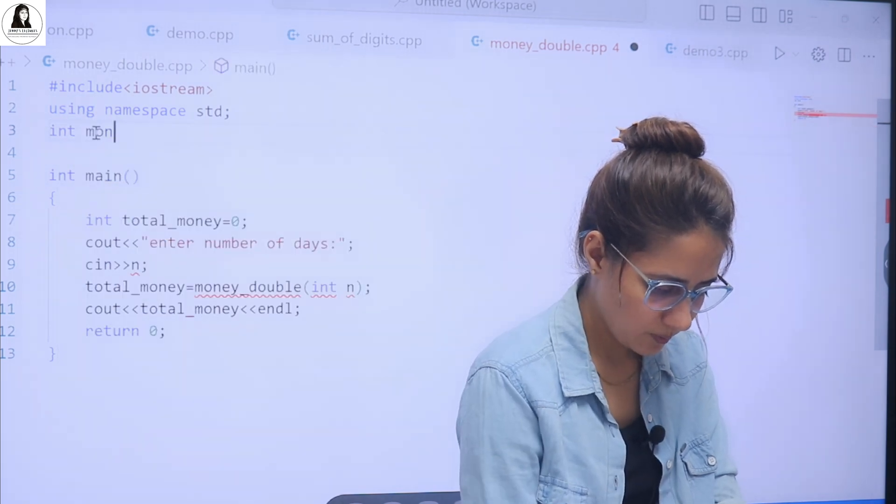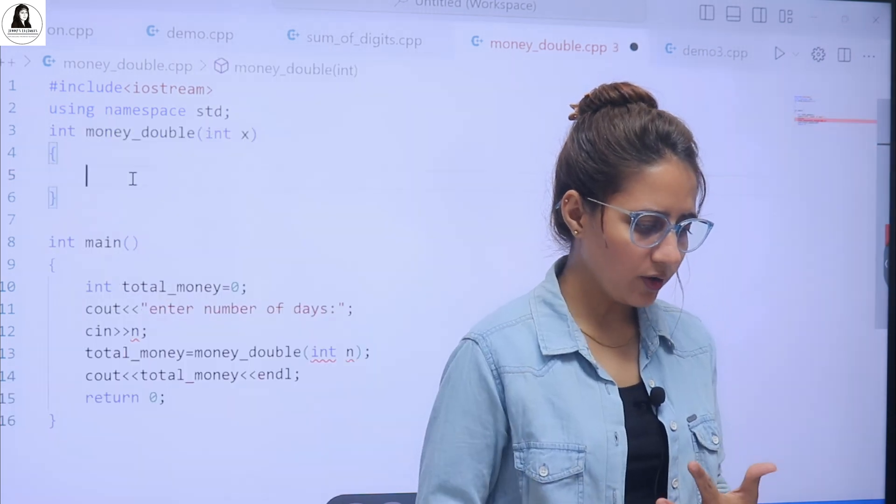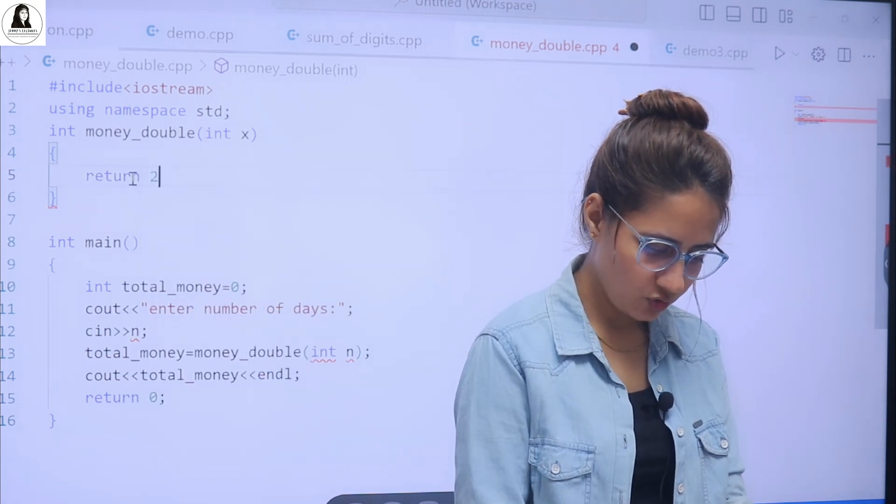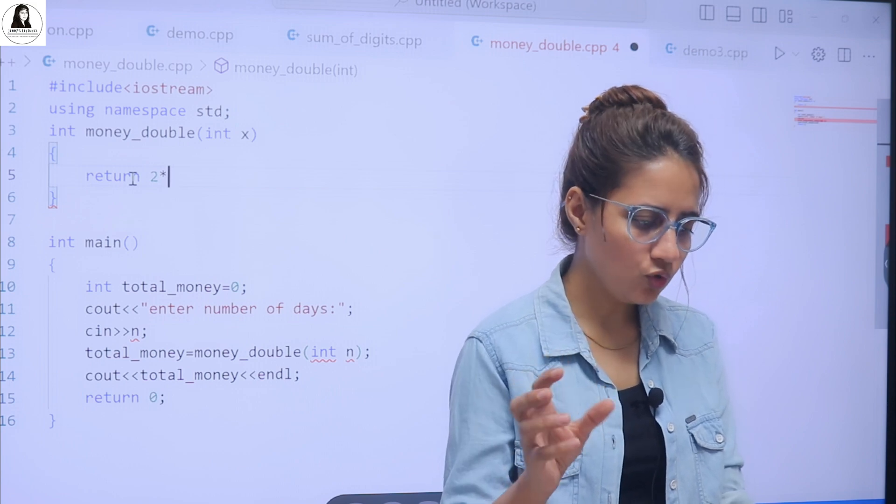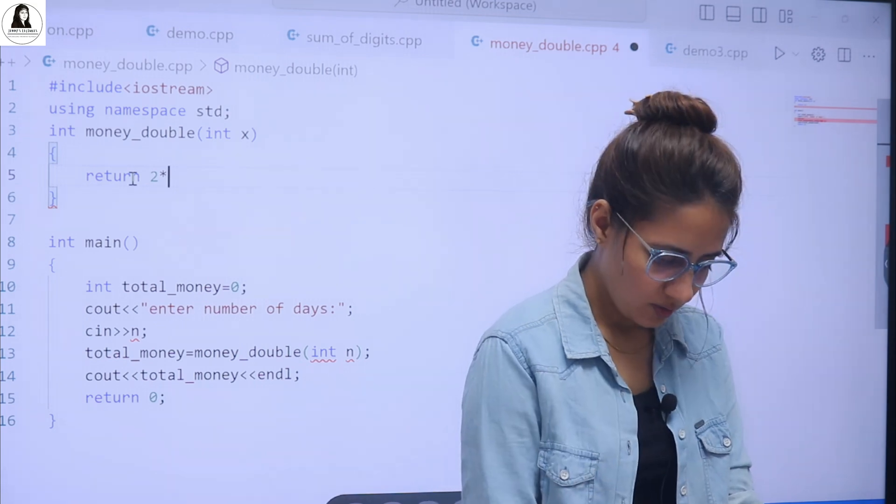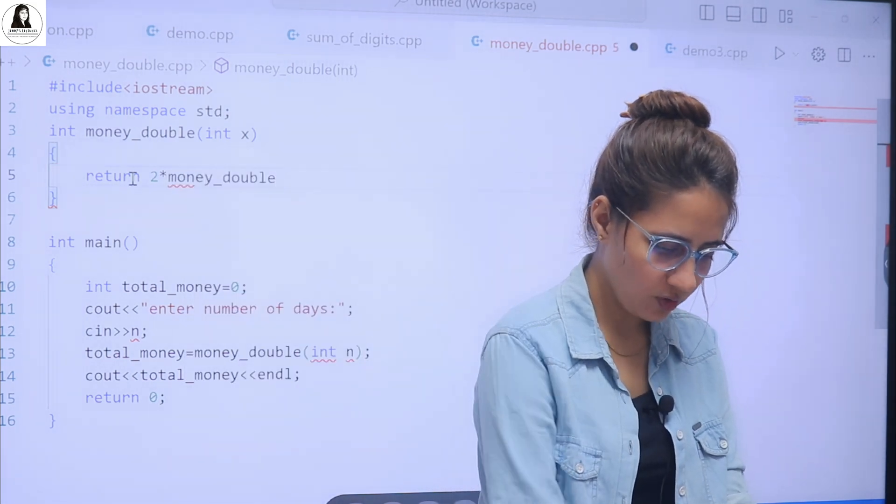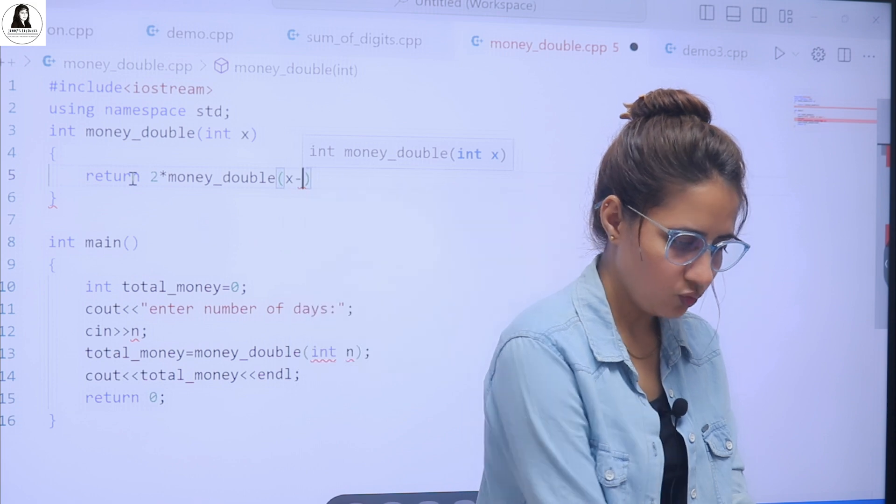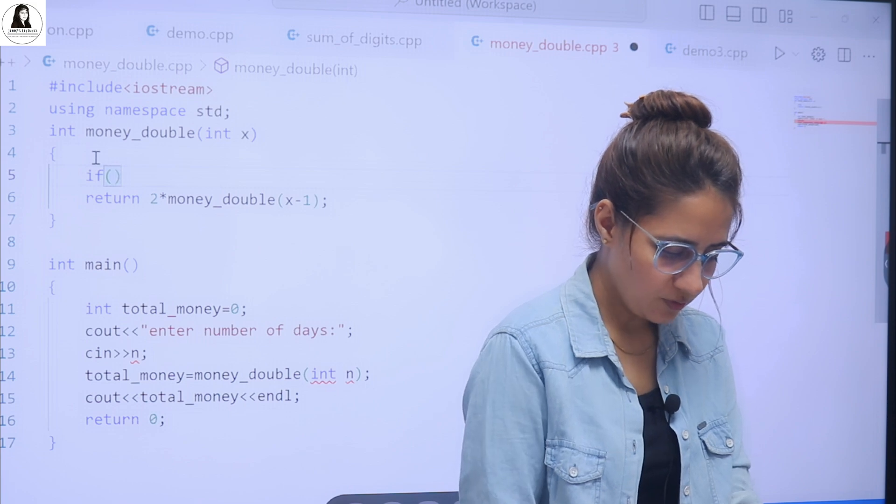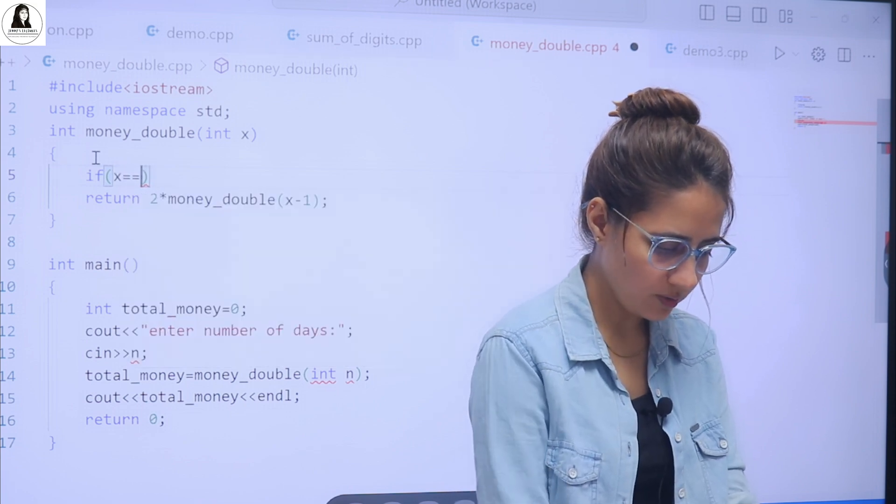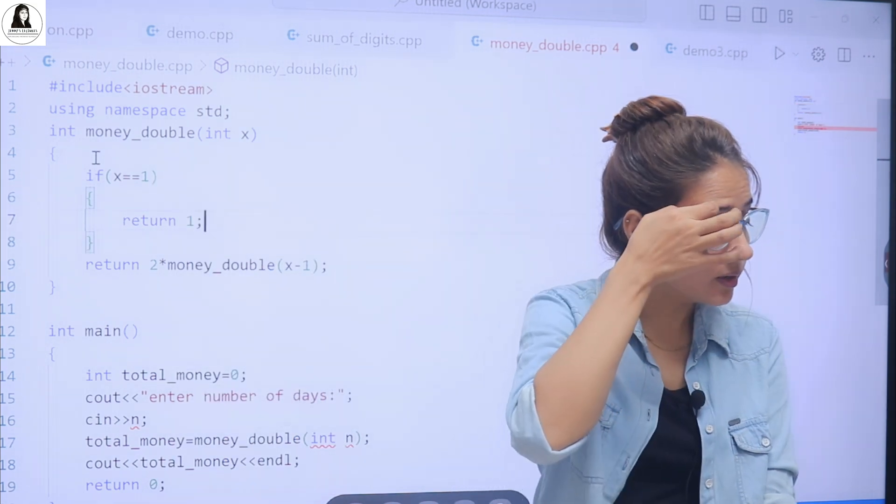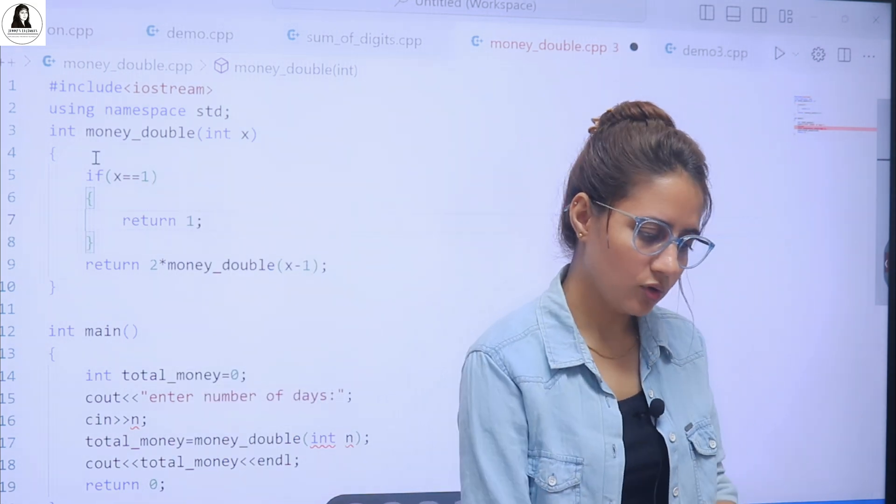But obviously, you have to define that function first. Right. So what you are going to return in this function? Return just 2 into whatever the money you will have on the previous day. So number of days are x. So on x minus 1 day. So let's call this function money double for x minus 1. That's it. I hope you got this. But obviously, base case that is crucial. Okay. If this x equal to equal to 1, simply return 1. Because on 1, I mean, day first, we have only 1 rupee. Right. So return 1 only.